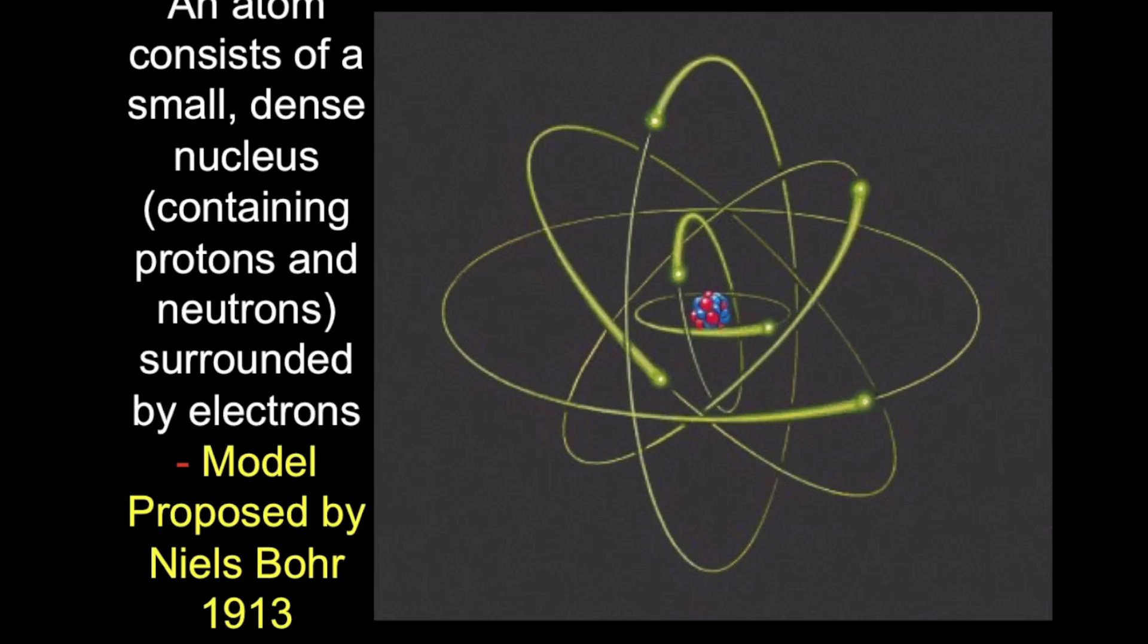You've probably heard of how an atom is structured. It has electrons, protons and neutrons. Well, the electrons are small, very light subatomic particles that have a negative charge and they orbit the nucleus of an atom.